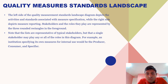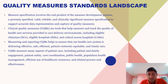Stakeholders and the roles they play are represented by the three rounded rectangles in the foreground. Note that the lists are representative of typical stakeholders, but a single stakeholder may play any or all of the roles in the diagram. For example, an institution specifying its own measures for internal use would be the producer, consumer, and specifier. The measure specification involves the end product of the measure development process — a precisely specified, valid, reliable, and clinically significant measure specification to support accurate data representation and capture of quality measures.